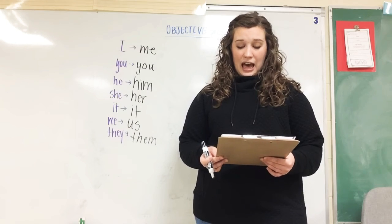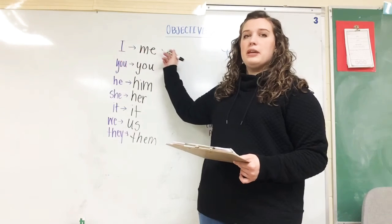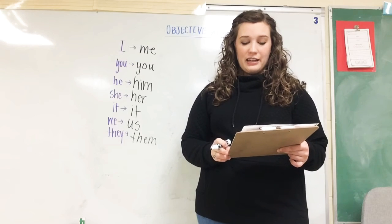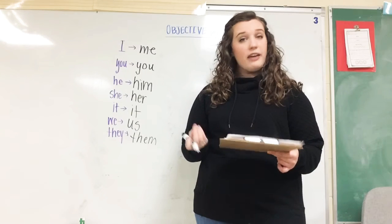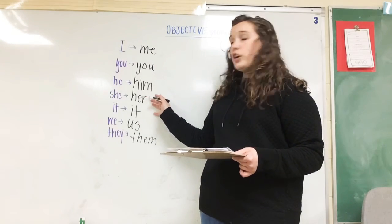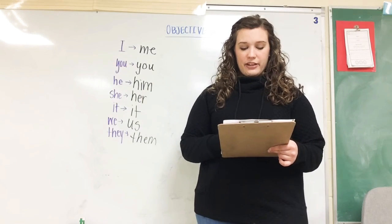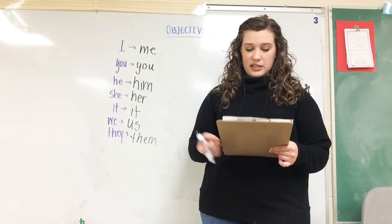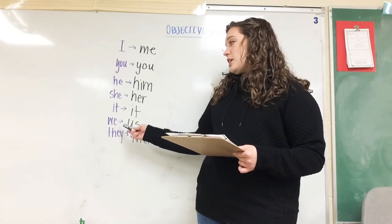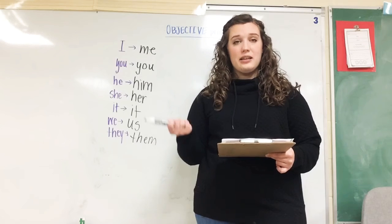Number three. Would you take I to Sunday school? Doesn't work. We need the objective form of I, which would be me. Would you take me to Sunday school? It does work. Number four. Natalie and I took she a fruit basket. Doesn't work. The objective form of she is her. Natalie and I took her a fruit basket. It sounds much better.